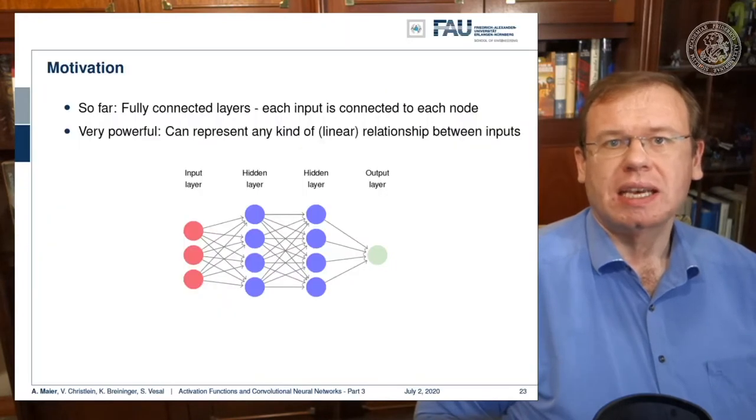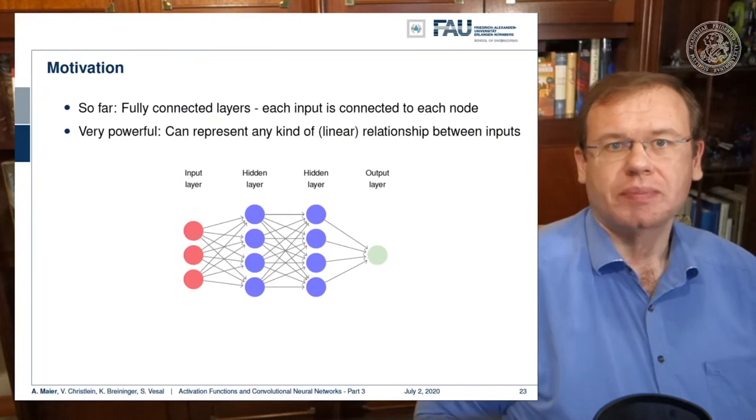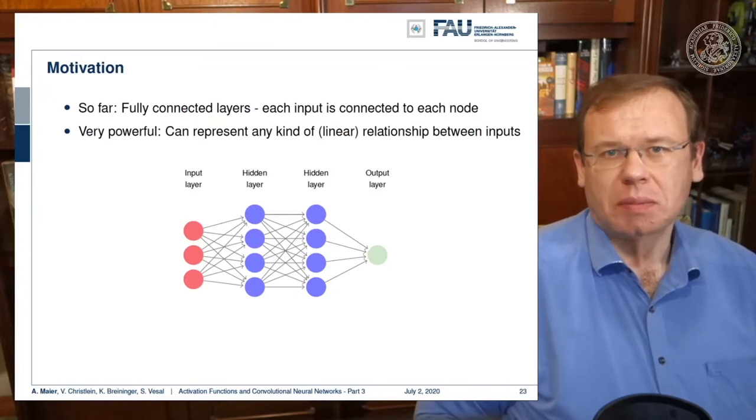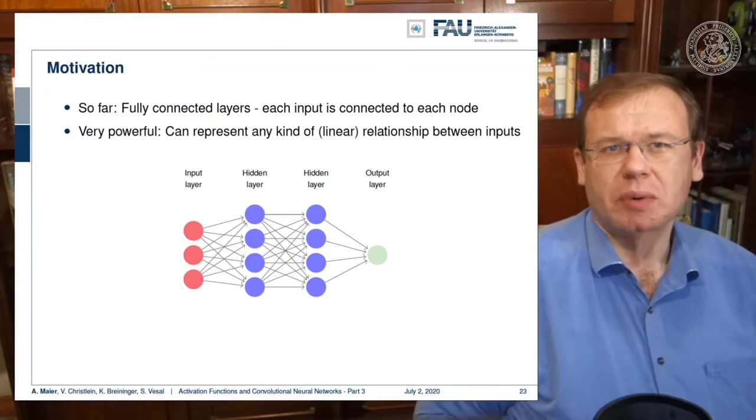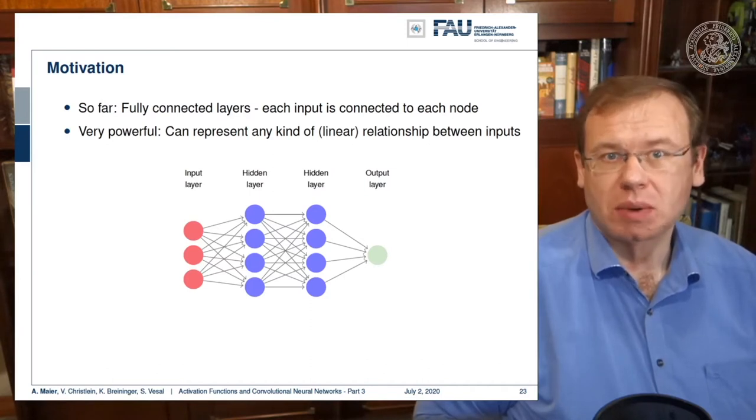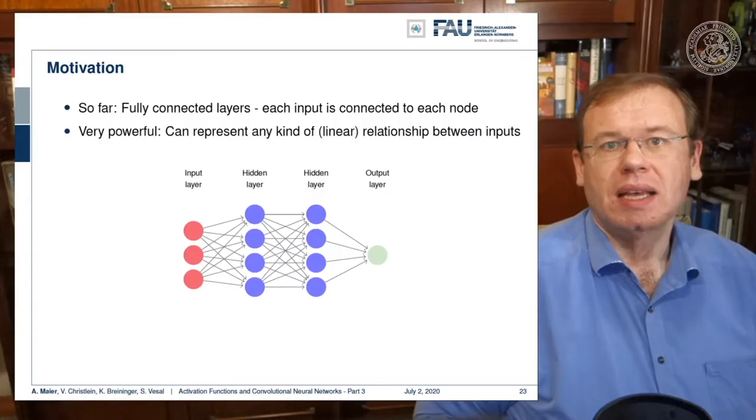This is very powerful because it can represent any kind of linear relationship between the inputs. Especially between every layer we have one matrix multiplication. Matrix multiplications essentially mean that from one layer to another layer we can have an entire change of representation.